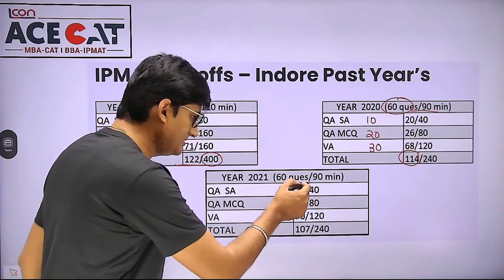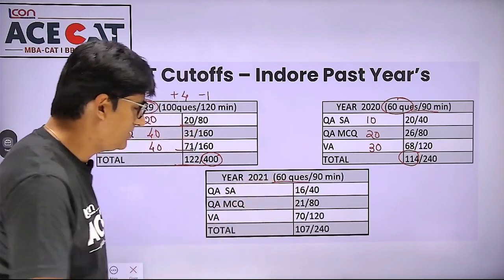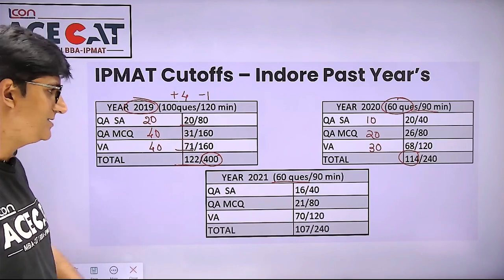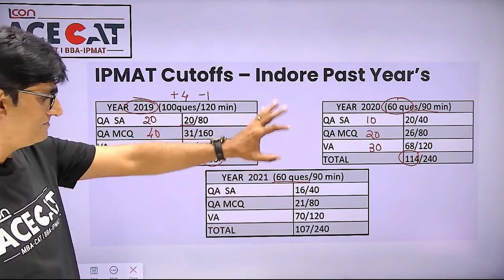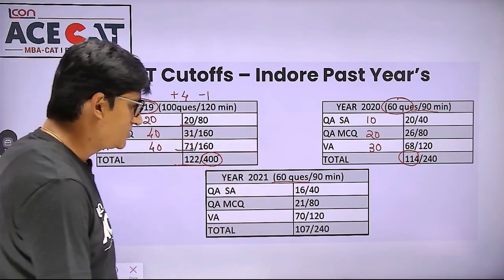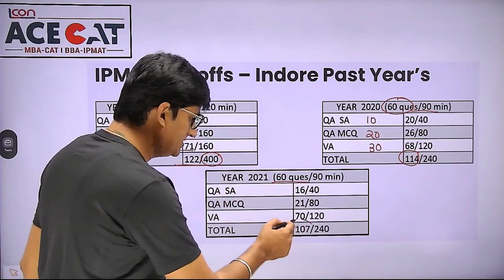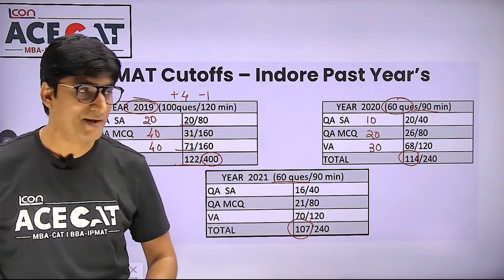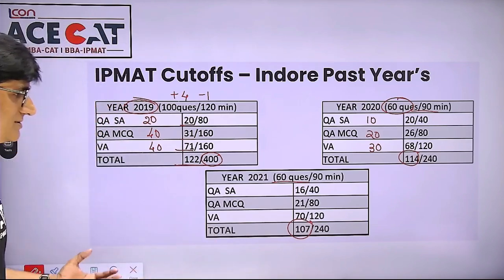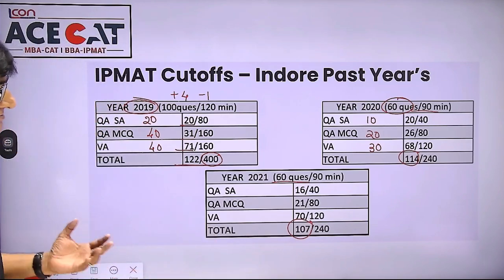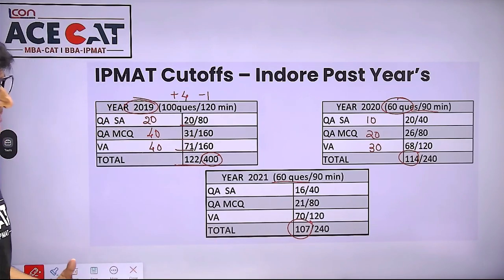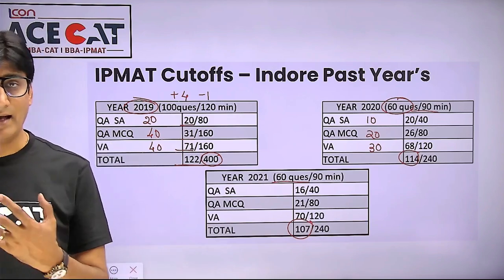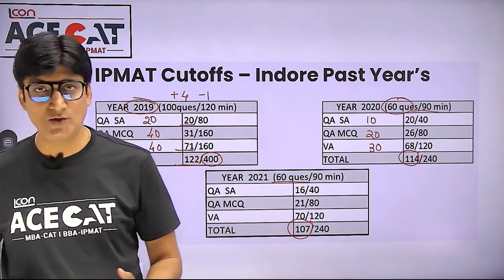In 2021, the same pattern continued — 60 questions and 90 minutes, exactly the same as 2020. The overall cutoff was 107 out of 240. Now let's see what happened in 2022, when the pattern changed again and the cutoff shot up significantly.